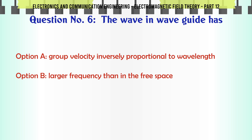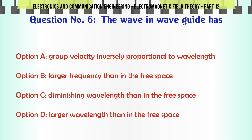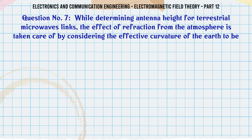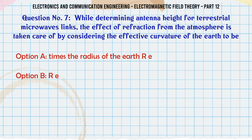The wave in a waveguide has: A. Group velocity inversely proportional to wavelength, B. Larger frequency than in free space, C. Diminishing wavelength than in free space, D. Larger wavelength than in free space.